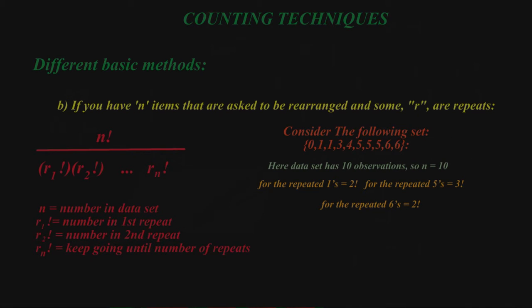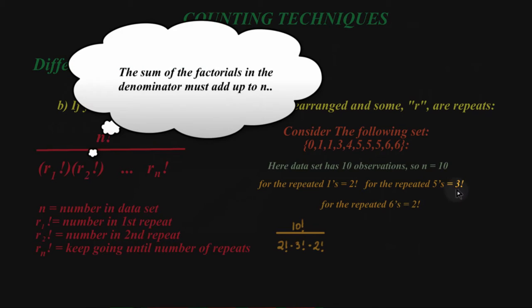Okay, and then when you do your total, what you're going to do is you're going to have the ten factorial over the two times the three, times the two that you got from these here.